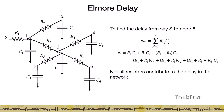Note that not all resistors contribute to the delay at every node. R4 contributes when measuring delay S to node 4, R5 contributes for S to node 5, and R6 does not contribute for S to node 5. Just because there are six resistors in the circuit doesn't mean all of them appear in every delay calculation. However, all capacitors will contribute to the delay at any node.